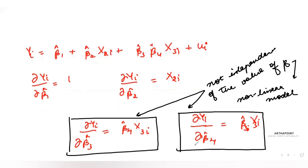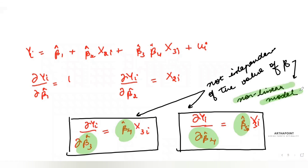When I differentiated with respect to β3, I got β4, and when I differentiated with respect to β4, I got β3. It doesn't matter which one — what is important is that they are not independent of β. And since they are not independent of β, you will conclude that this is a non-linear model to work with.